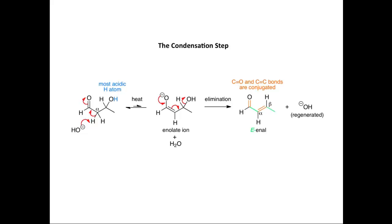Here we'll look at the use of hydroxide ion and heat. Initially, the hydroxide ion will deprotonate at the alpha position to form an enolate ion. The most acidic hydrogen atom in the beta-hydroxyaldehyde will be the OH group, and we'll get predominant deprotonation there, but even a small amount of deprotonation at the alpha position will lead to an enolate ion, which rapidly eliminates hydroxide ion as a leaving group to form the enal product.